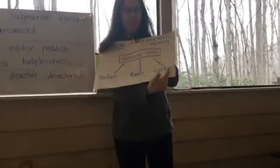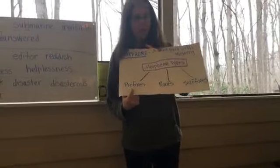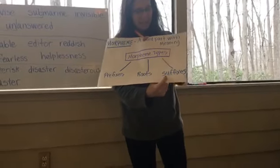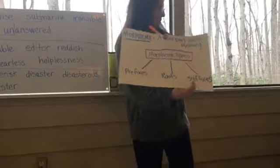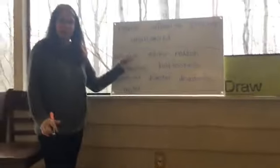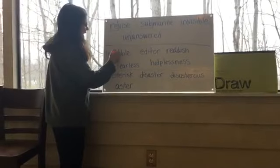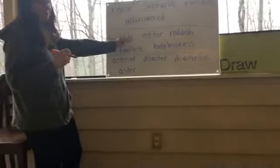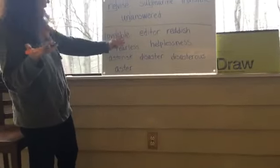Prefixes come at the beginning of the word, and suffixes come at the end of the word. Here's an example: this word has a suffix on it. The suffix is '-able,' which means 'can' or 'able to.' We add it to 'love' and it means you can love it — lovable.